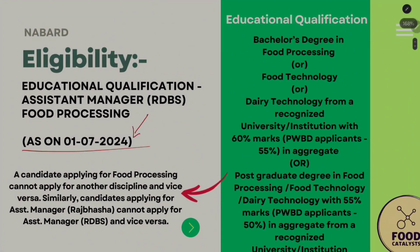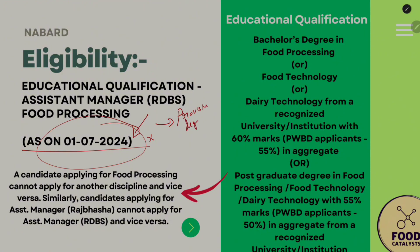The eligibility is as of 17th July 2024, which means if you haven't completed your final year or received results before that specific date, you cannot apply. However, if you have completed your examinations and results are out but you don't yet have a degree certificate, you can submit your mark sheet or ask your college for a provisional degree certificate to apply. Once you receive the actual certificate, you can submit it for an update.